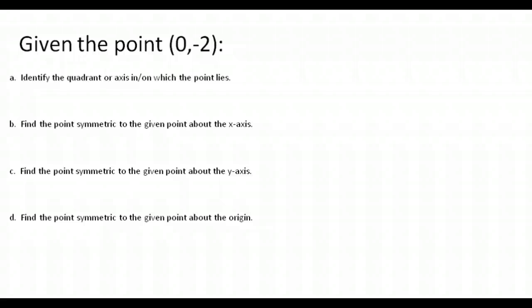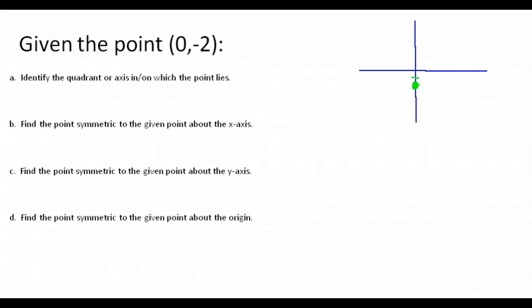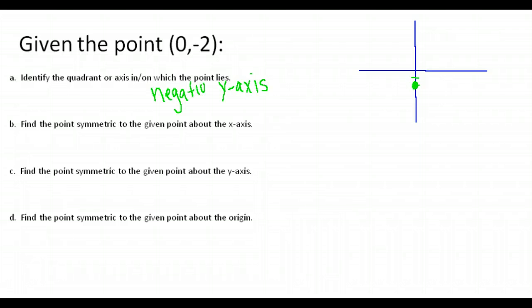This one's a little different. We're given the point zero, negative two. It's on the y-axis and down two — there is our original point. First, it asks what quadrant or axis it lies on. It doesn't lie in any of the quadrants; the quadrants are the open spaces. It lies on the y-axis — more specifically, on the negative y-axis, because that's where the negative y-values are located.